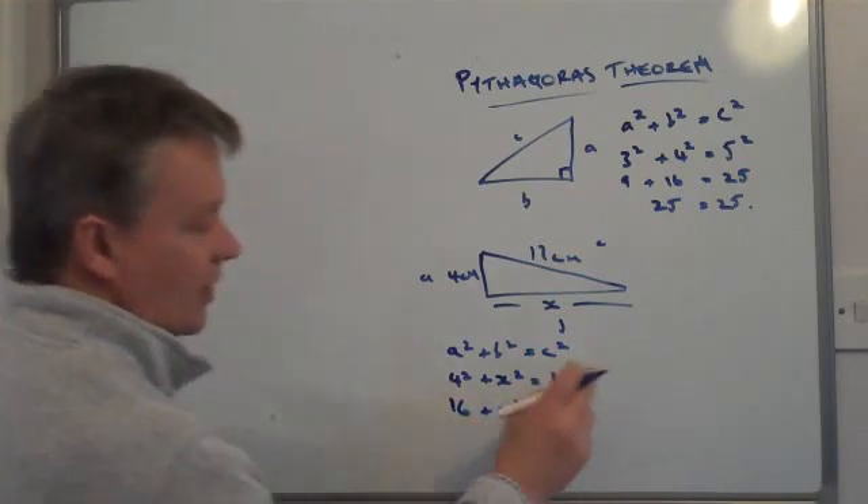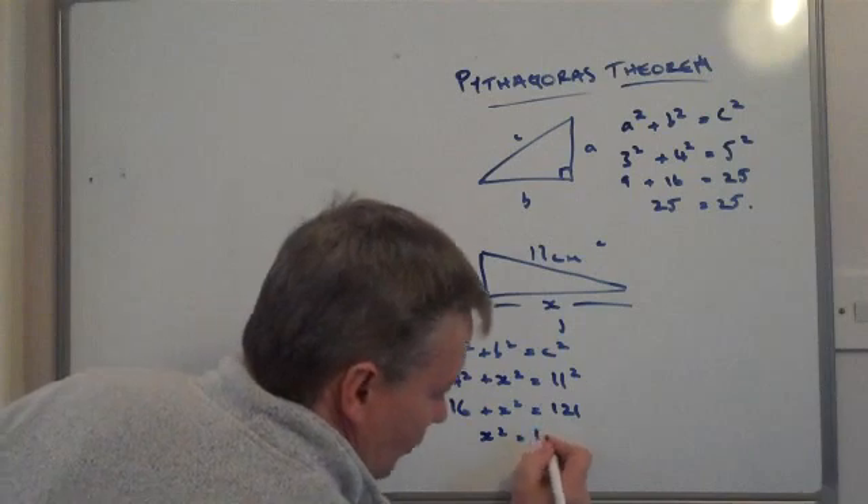So I'll just work those out, just because it might be a little bit easier. So 4 squared is 4 times 4, which is 16, plus X squared equals 11 squared, which is 11 times 11, which is 121. So I've got 16 plus X squared equals 121. So what I'm going to do is I'm going to subtract 16 from both sides, and I'm going to get X squared equals 105.